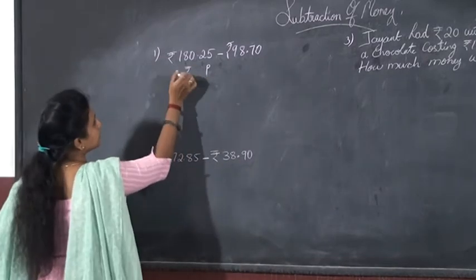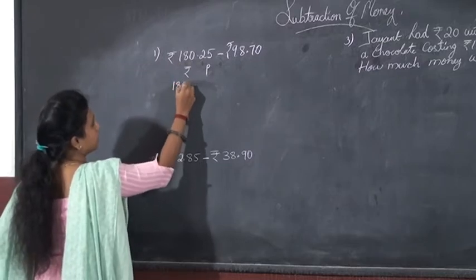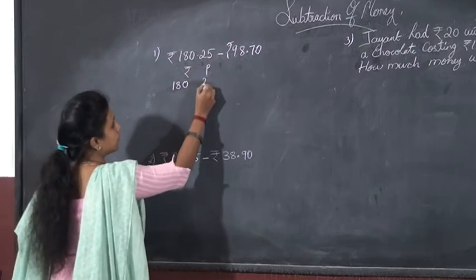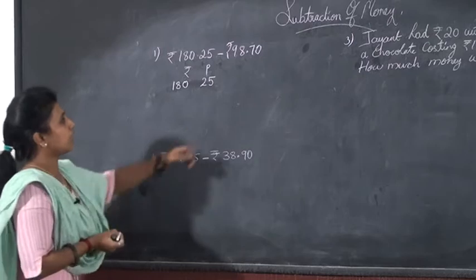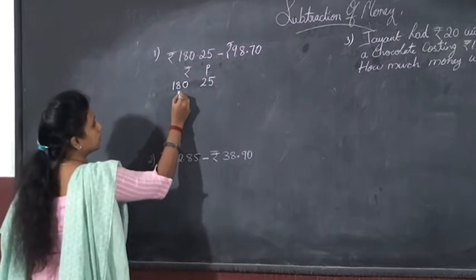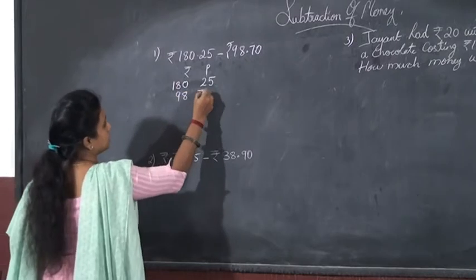That is, 180 is in the rupees section. Okay, I write 180 here. 25 paise, so write 25 in the paise side. Then, 98 rupees. 98 rupees, then 70 here.